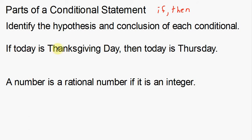So here's our first example: 'If today is Thanksgiving, then today is Thursday.' Now, we're not looking at the validity of this statement — we don't care if it's right or wrong. We're just looking at what the hypothesis and the conclusion are. One easy way to label them is to underline the hypothesis and then double underline the conclusion. That's a quick and efficient way of identifying them.